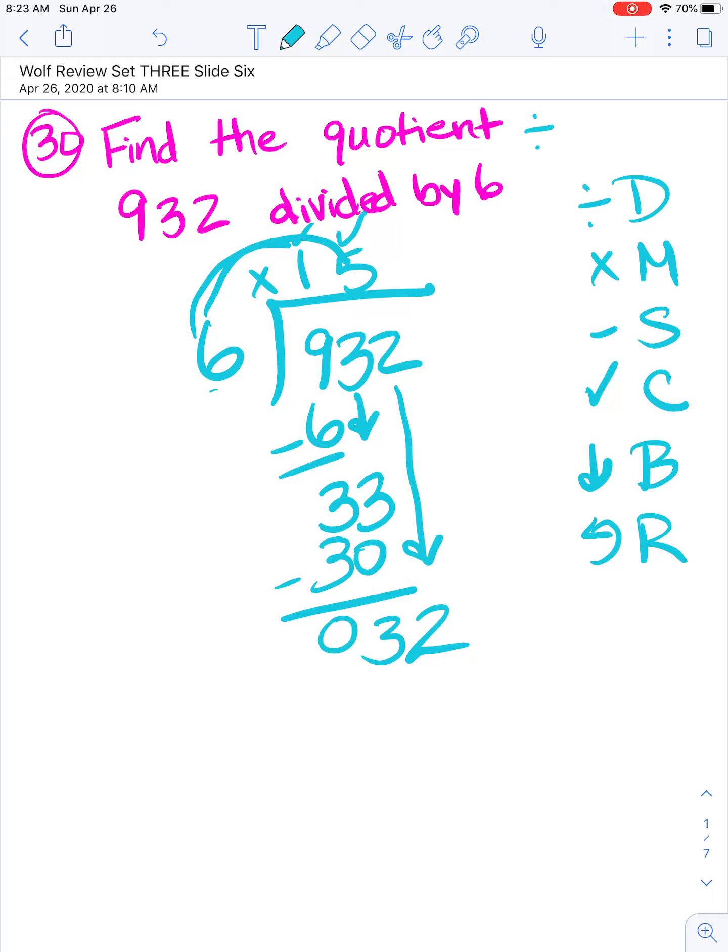We get 32 as our new number to divide by. 32 divided by 6 is again 5. I multiply: 6 times 5 is 30. Now I subtract. 2 is less than 6, so I know I did it right. I have nothing to bring down, so that is my remainder.